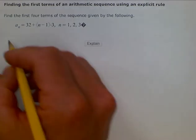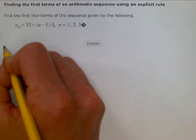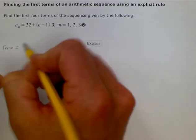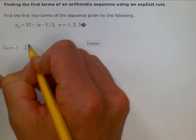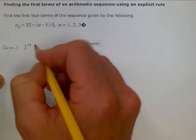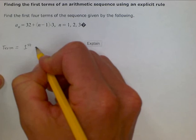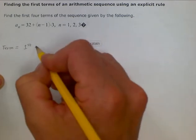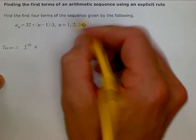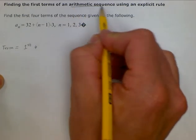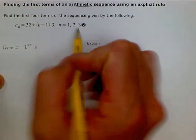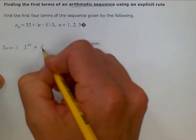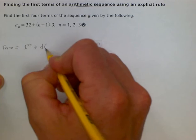For any term that you want to find, it is equal to the starting value or the first term, and you add—excuse me, when we're working with arithmetic sequences, you add. If we were doing geometric, we would multiply. You're going to add the common difference, which is then multiplied by the previous term.